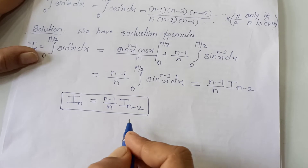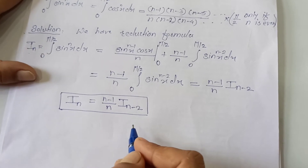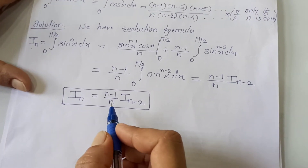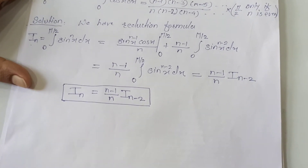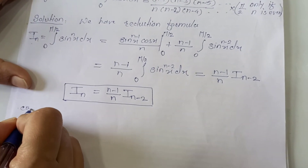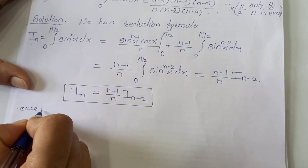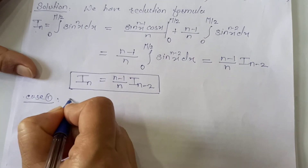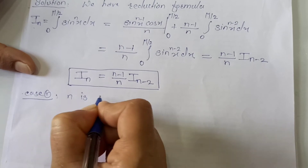Now there are two cases for n: n can be even or it can be odd. Let's take Case 1: n is odd.